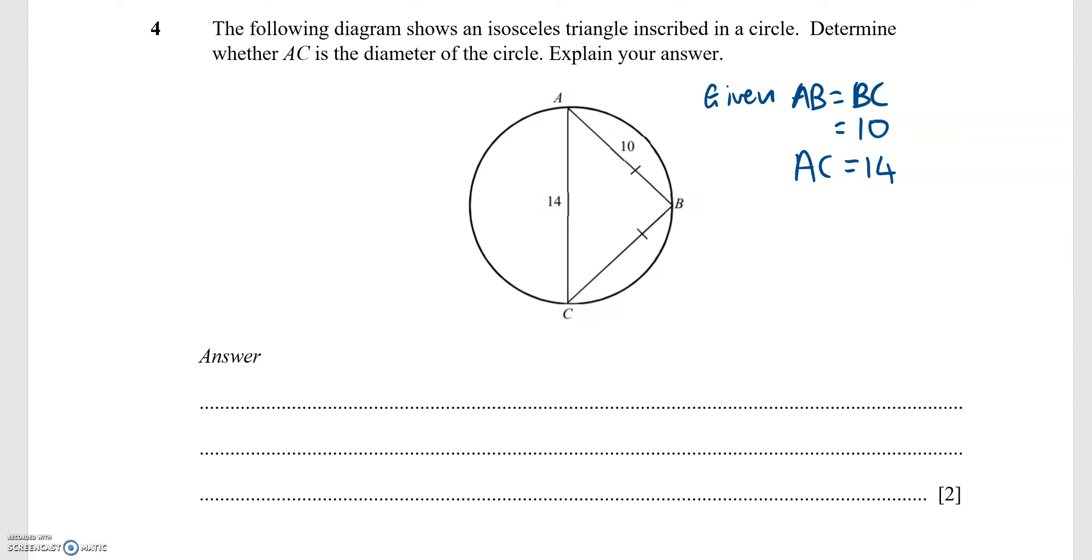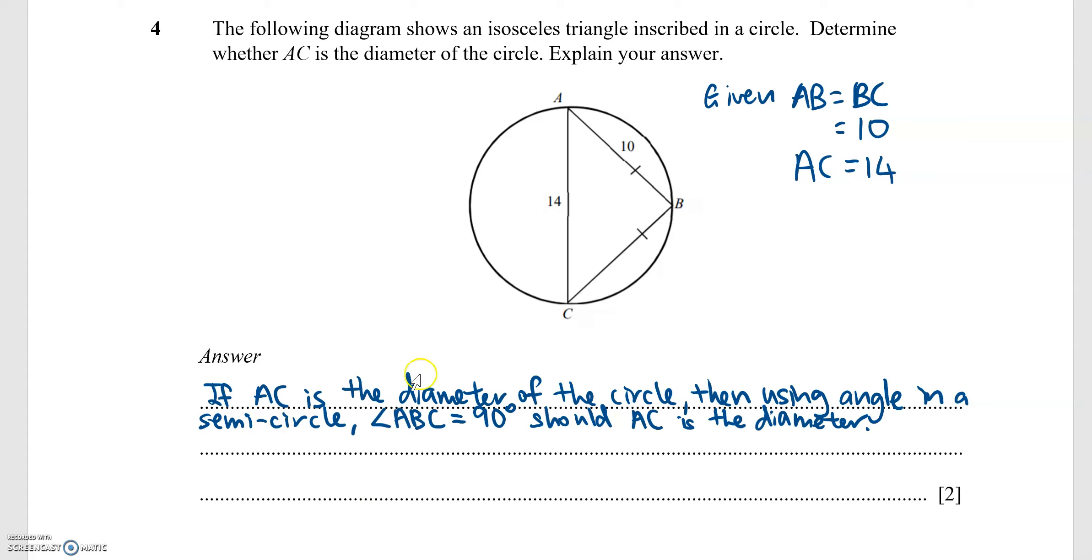So to determine whether AC is the diameter of the circle, we need to explore some properties of circles that we know. If AC is the diameter of the circle, then making use of the property angle in a semicircle, angle ABC would then be 90 degrees if AC is the diameter.